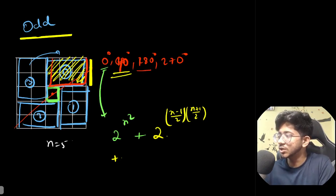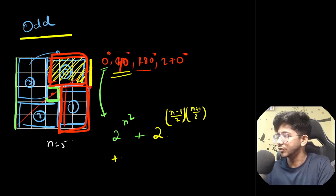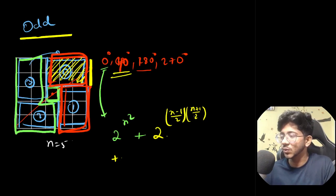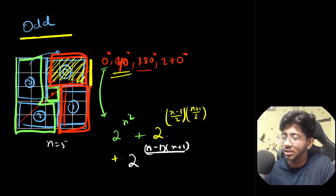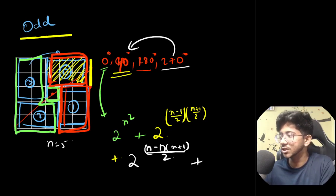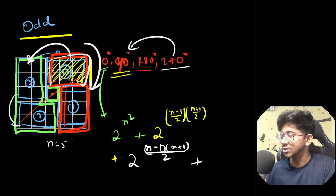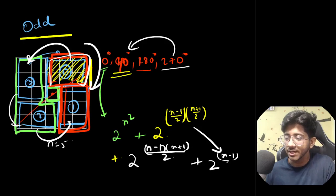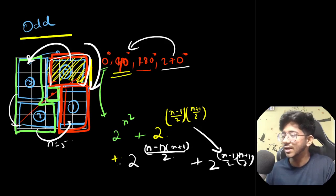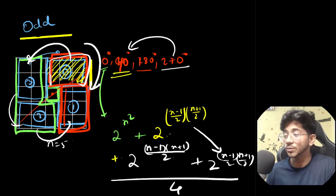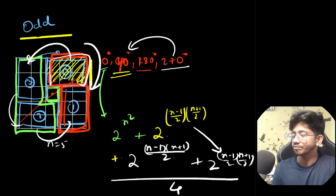For 180° rotation in the odd case, we combine the zero-block and one-block, giving roughly twice the cells. The fixed colorings are 2 × 2^((n²−1)/2) — accounting for the central cell's free choice. For 270°, by the same reasoning as 90°, we get 2 × 2^((n²−1)/4). Dividing the sum of all four terms by 4 gives the distinct colorings for the odd case.